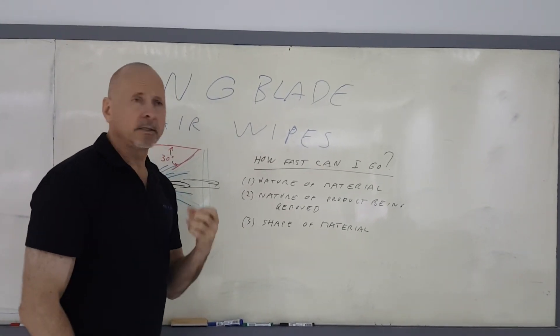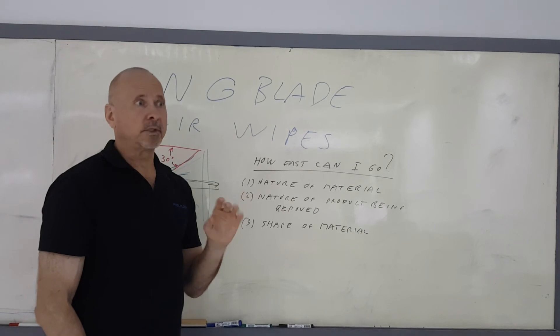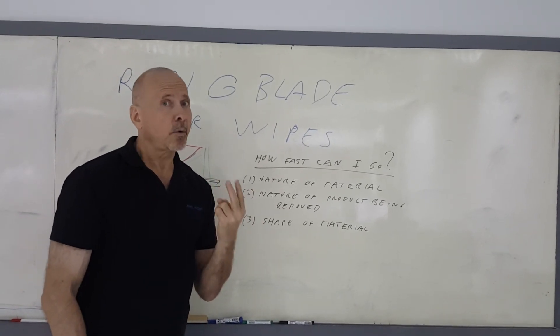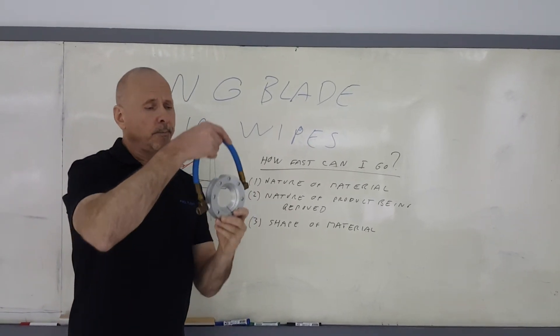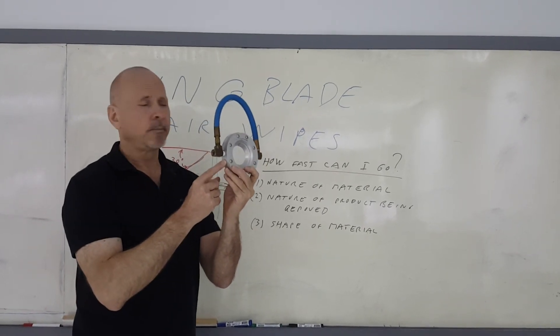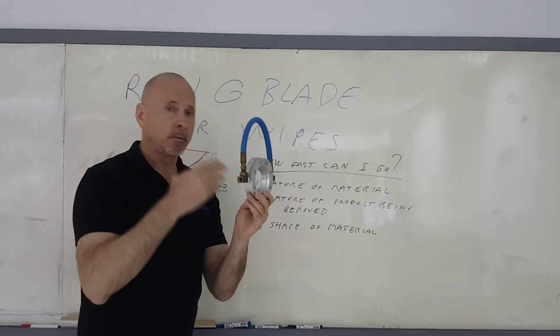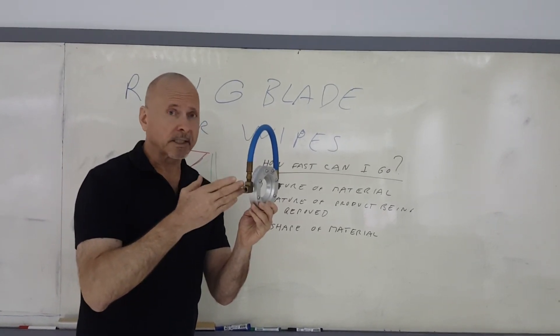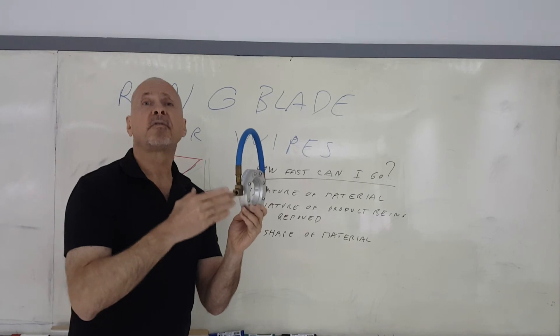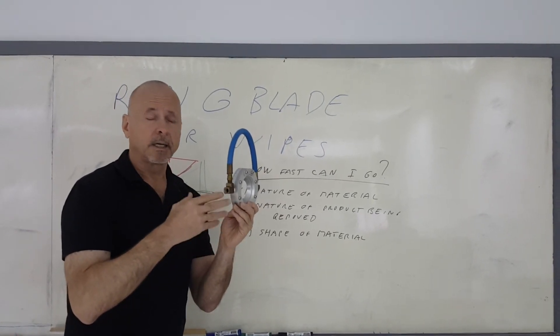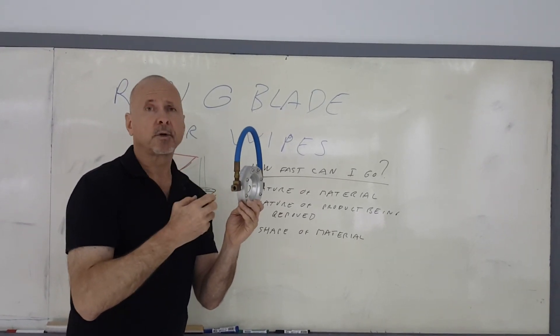So in that case, you either have to go slower, which you really don't want to do in production, or you have two options. One, you can actually open the gap up where the air comes out on the air wipe and increase it. You double the air consumption, but you will also double the flow and you will double the force. So you will have more force to clean and dry the part.